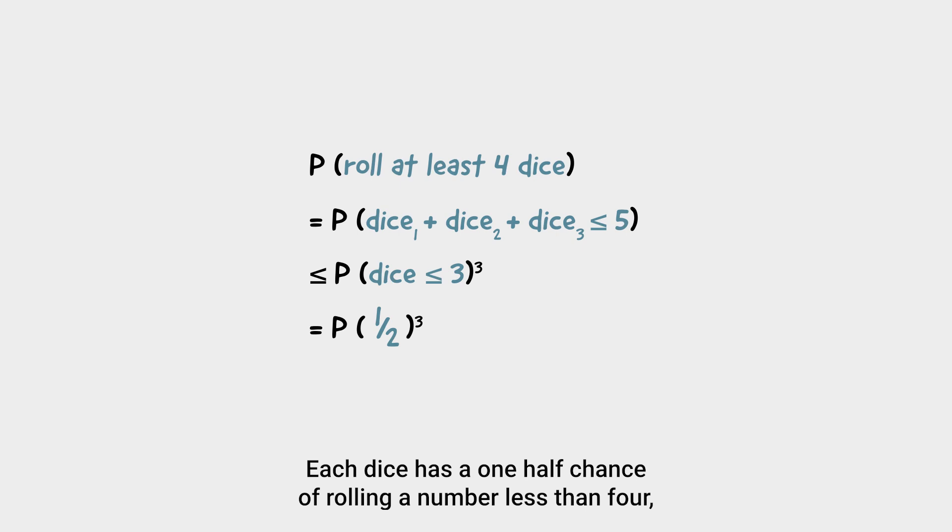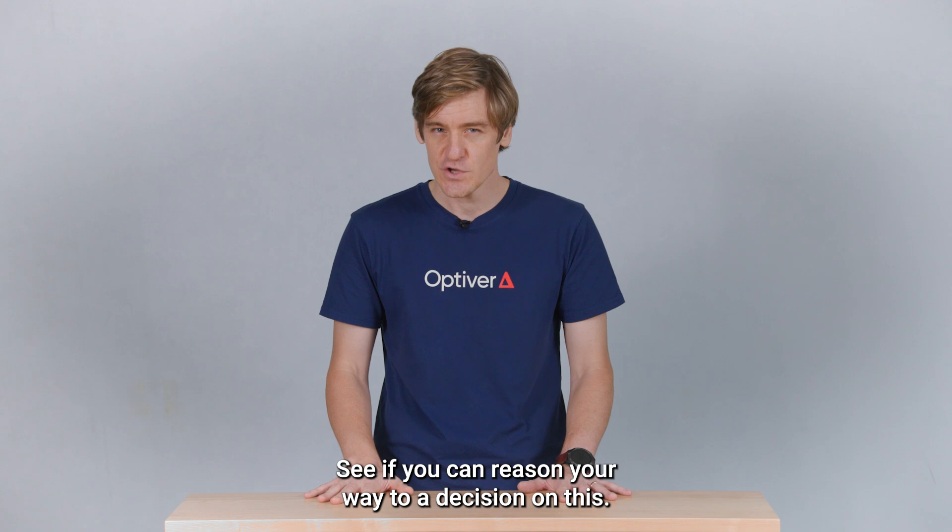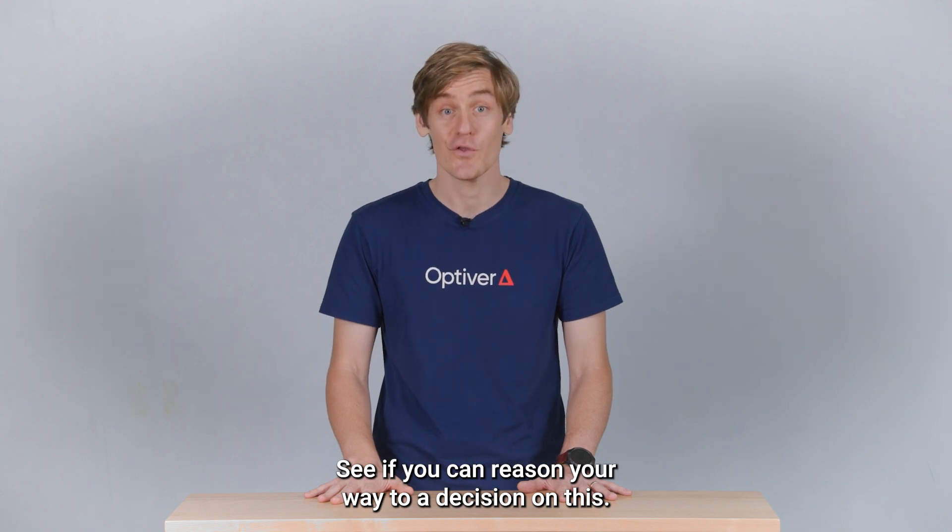We can use this to quickly nab an upper bound for the probability here. Each dice has a one half chance of rolling a number less than four. So there is a one on eight chance that we roll three dice and they all show something less than four. We can already see that the bulk of this roll distribution is close to two rolls. And so that's probably going to be around where the expected value is. And will the actual answer be slightly above or slightly below two? See if you can reason your way to a decision on this.